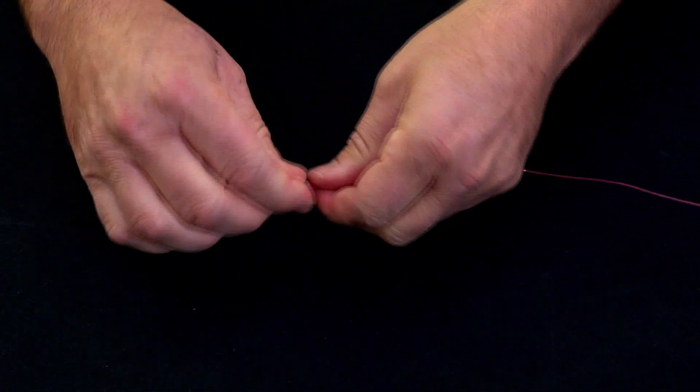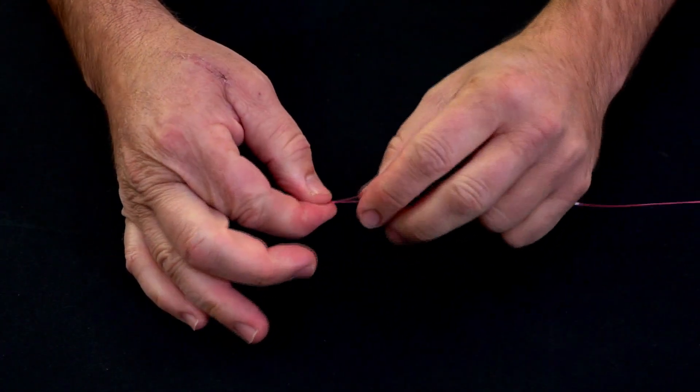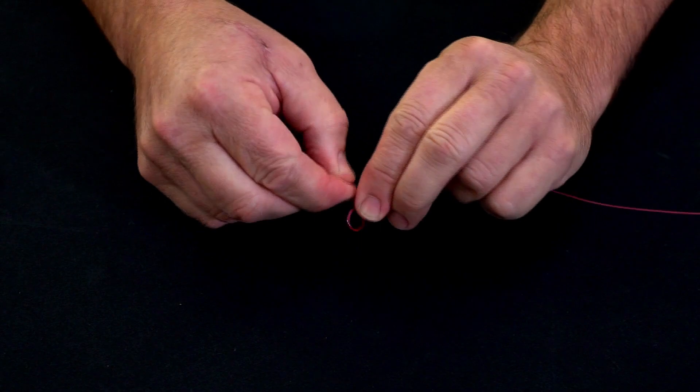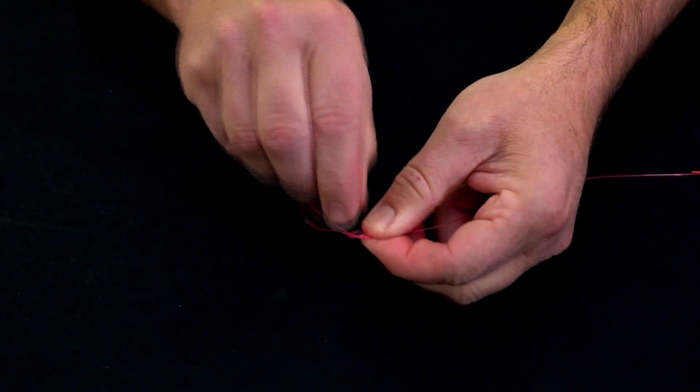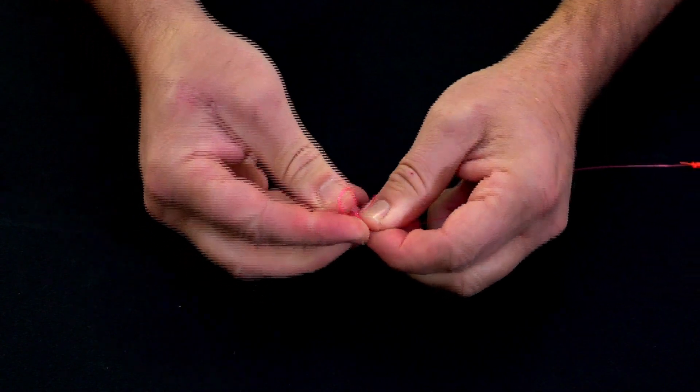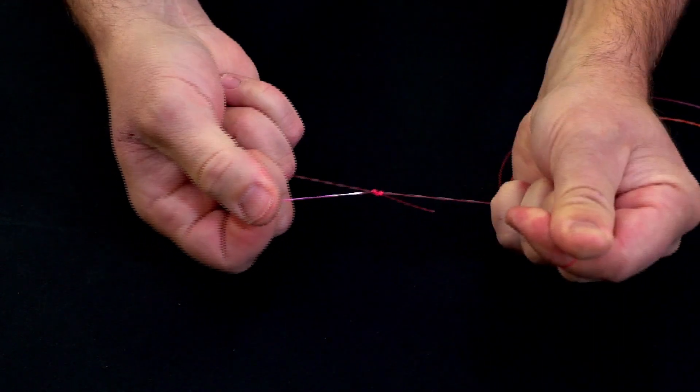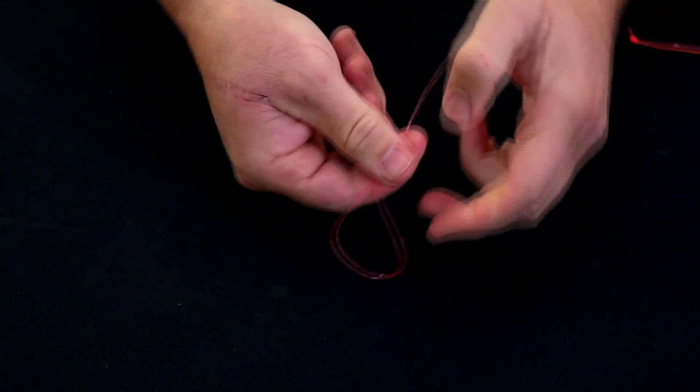To attach our sinker it is so easy. I just run my line around on itself, make a loop again, and then slide that main loop through twice. Now you need to go two times, pull it up tight, and that is your loop for your sinker.